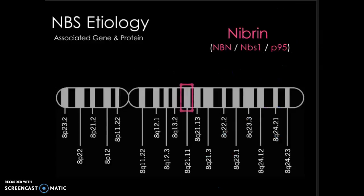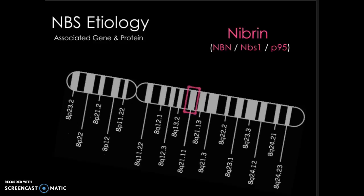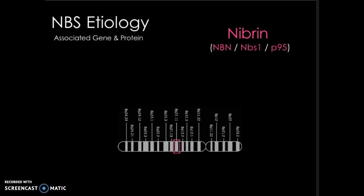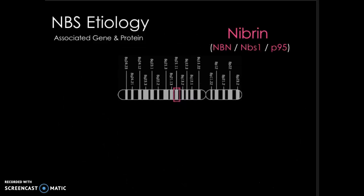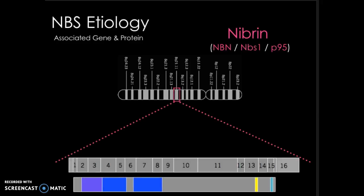Nibrin is a 4,639 base pair gene located on chromosome 8 and is mutated in nearly 100% of those affected with NBS. Nibrin translates into a 754 amino acid protein commonly called NBS1 or P95.